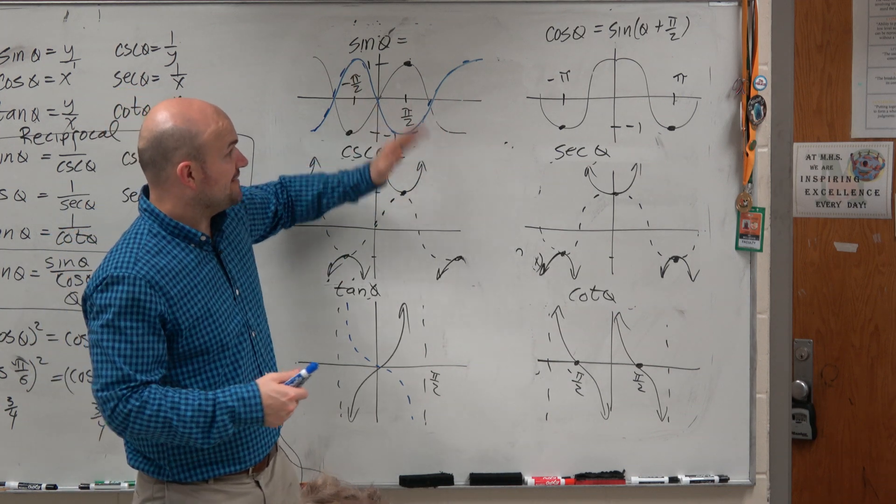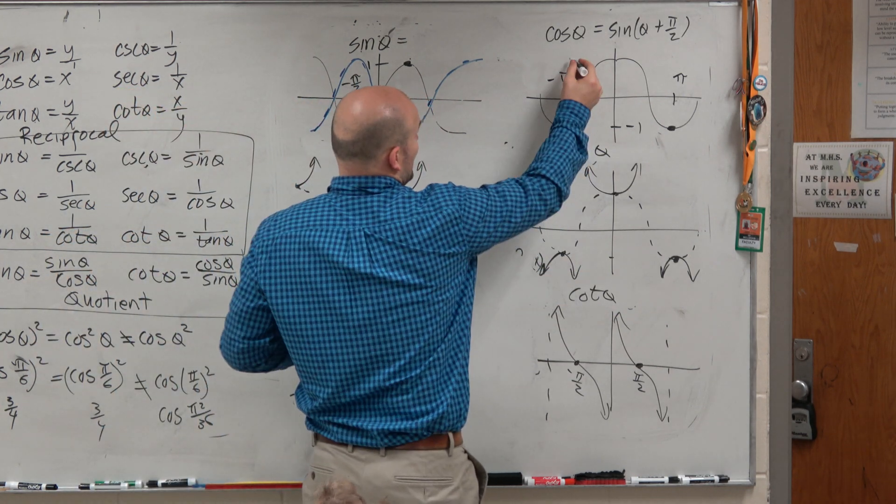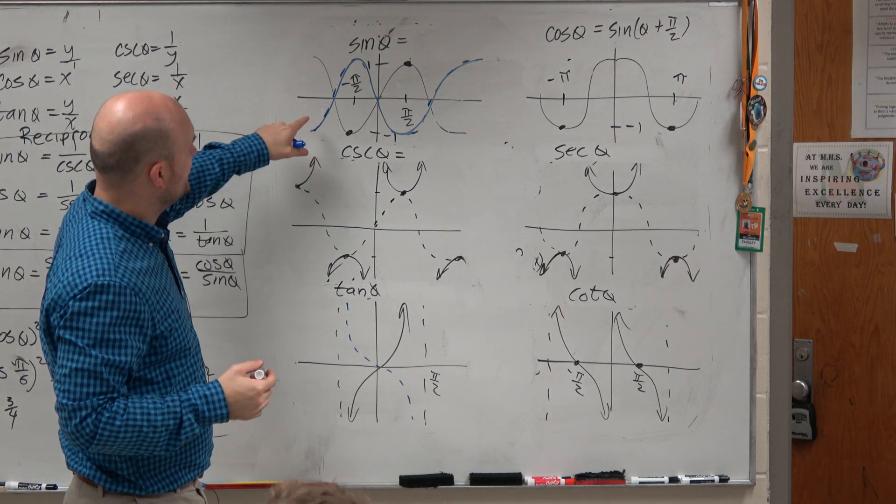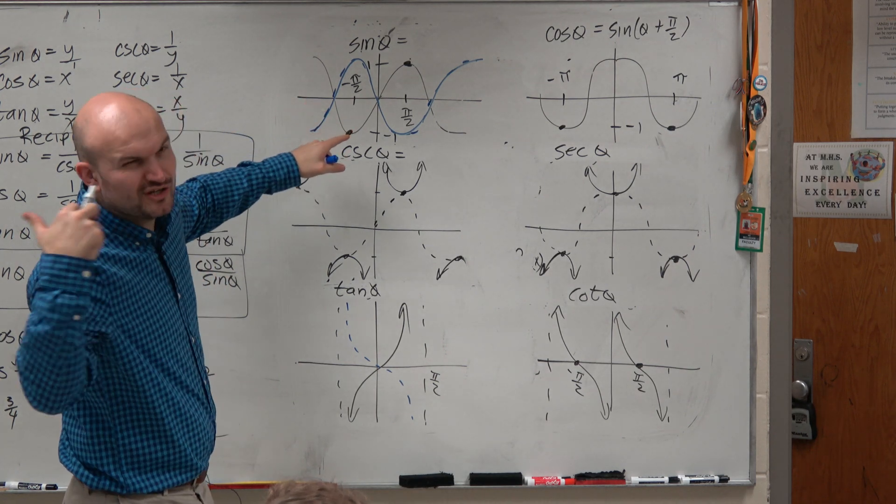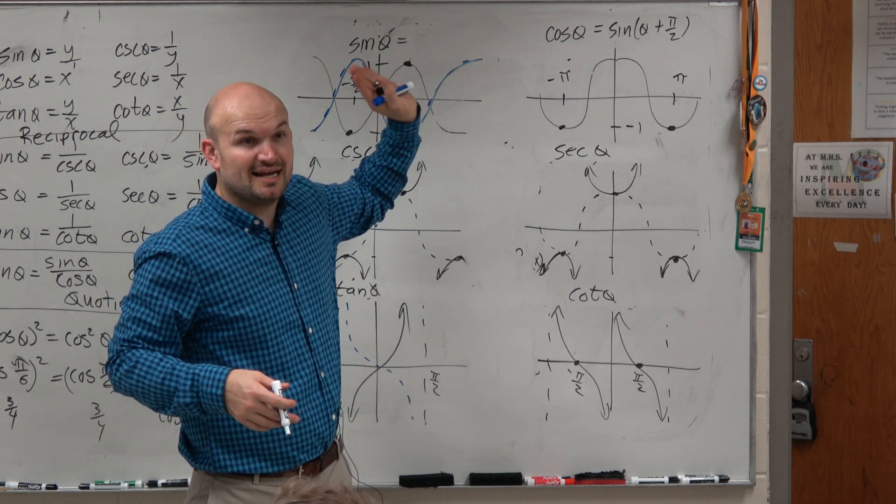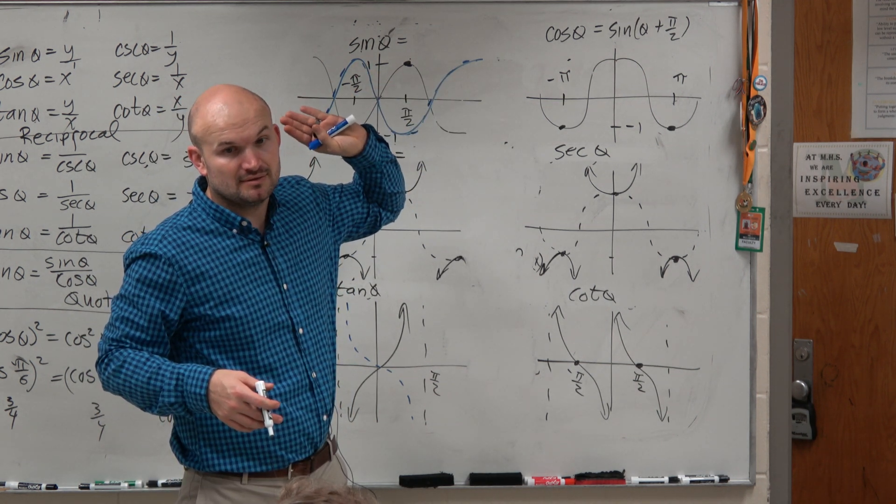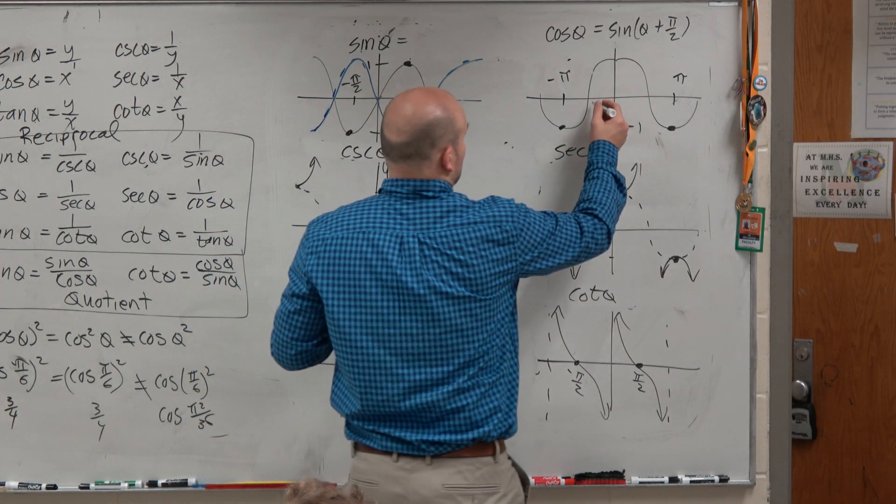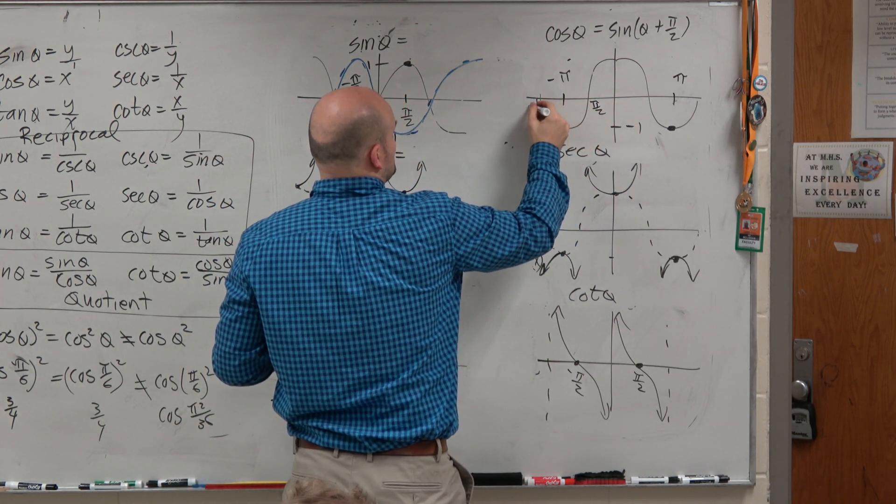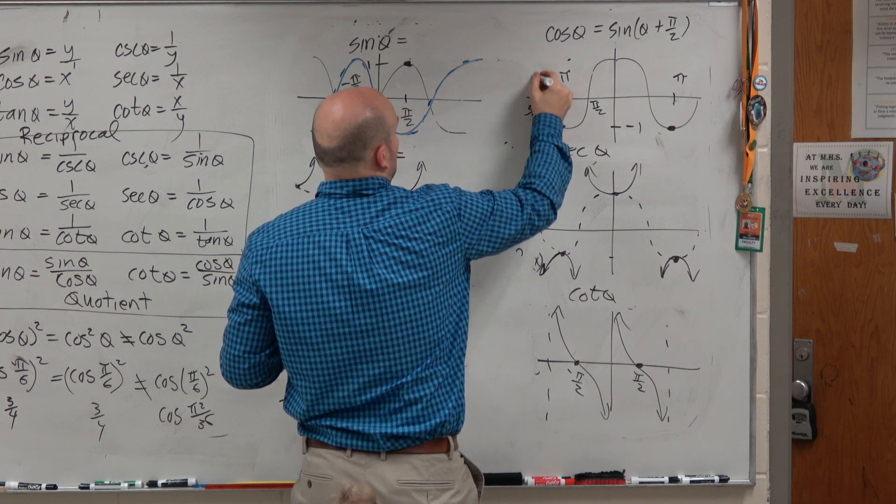You can't shift it to the left because here's pi halves. If you, the tangent function, I'll show you guys on Desmos because this graph didn't, but you can't shift it to the left. It actually, there's not a value there from the left. Like this graph, here's pi halves. Here's pi. Here's 3 pi halves.